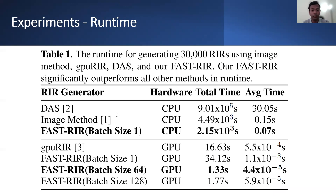GPU RIR is optimized to run on a GPU, so we run GPU RIR only on a GPU. For a fair comparison with CPU implementations of the image method and diffuse acoustic simulator, we generate room impulse responses using fast RIR with batch size 1 on a CPU. Our proposed fast RIR is 400 times faster than the diffuse acoustic simulator on a CPU. GPU RIR performs better than fast RIR with batch size 1, which is not the real use case. To the best of our knowledge, GPU RIR does not support batch parallelization, while fast RIR does. With batch size 64, fast RIR is 12 times faster than GPU RIR.